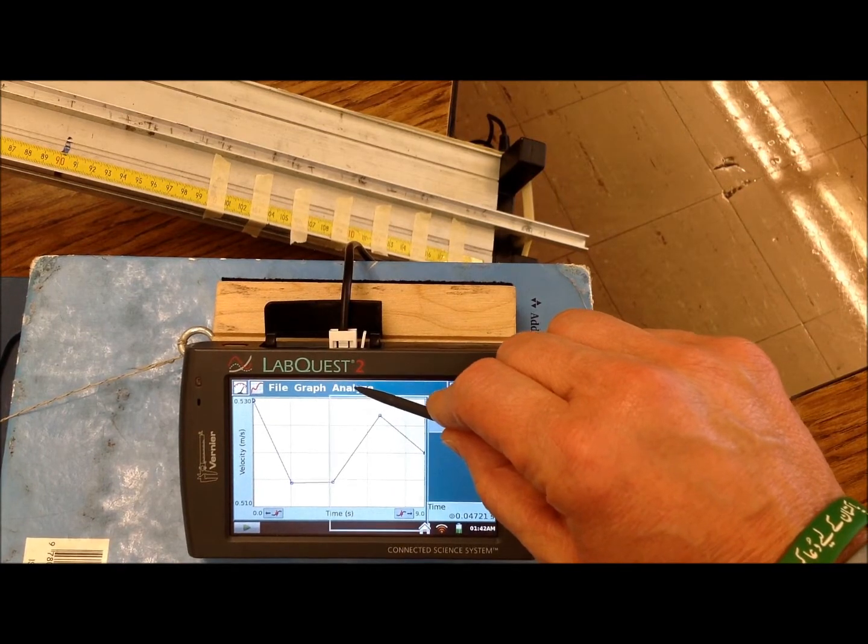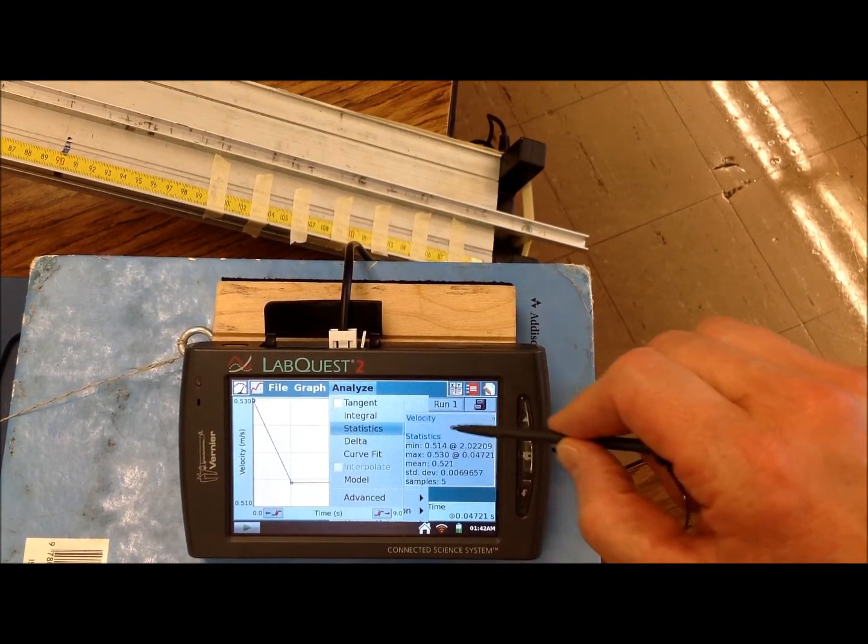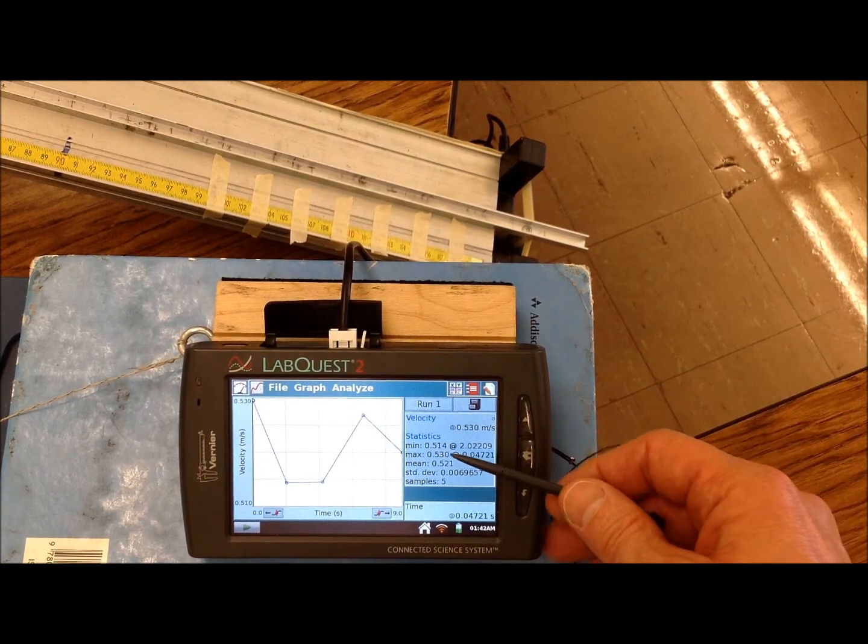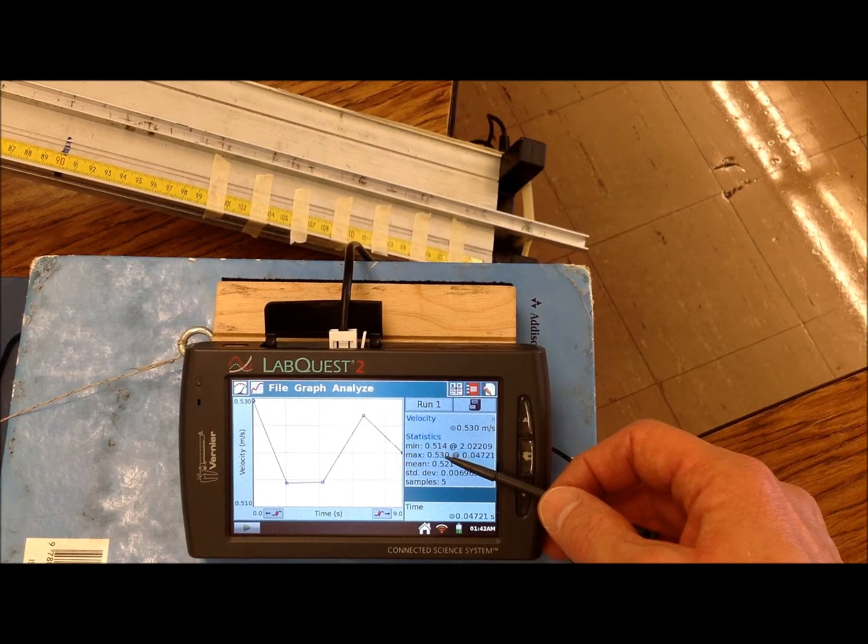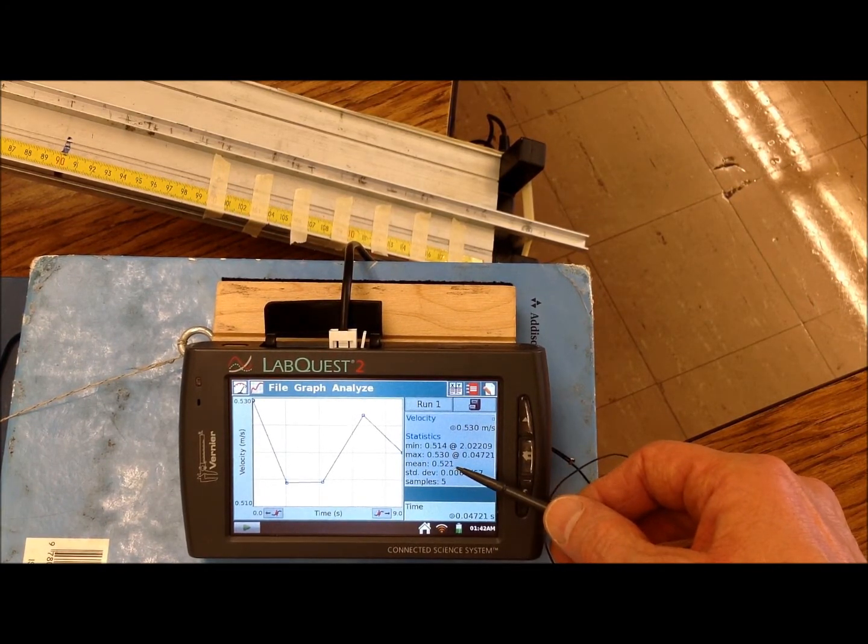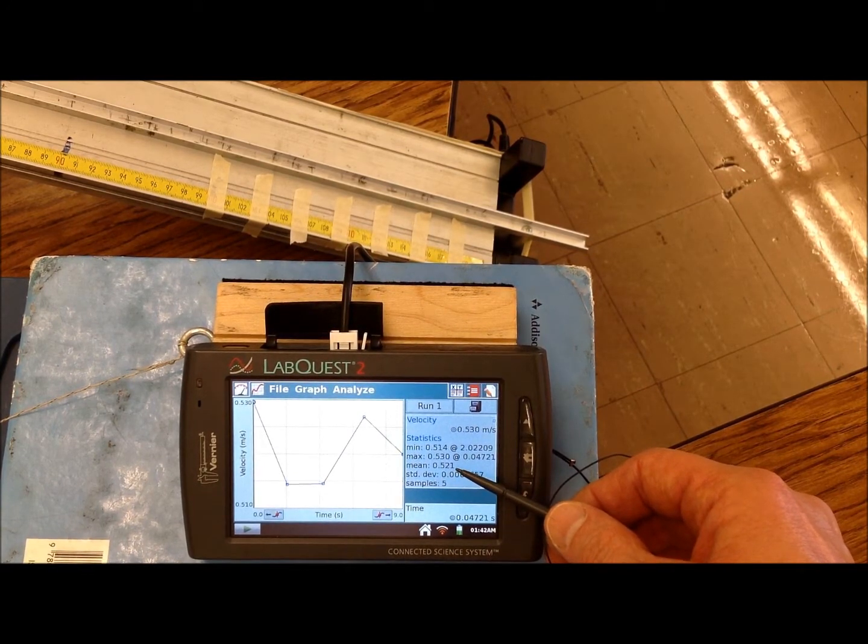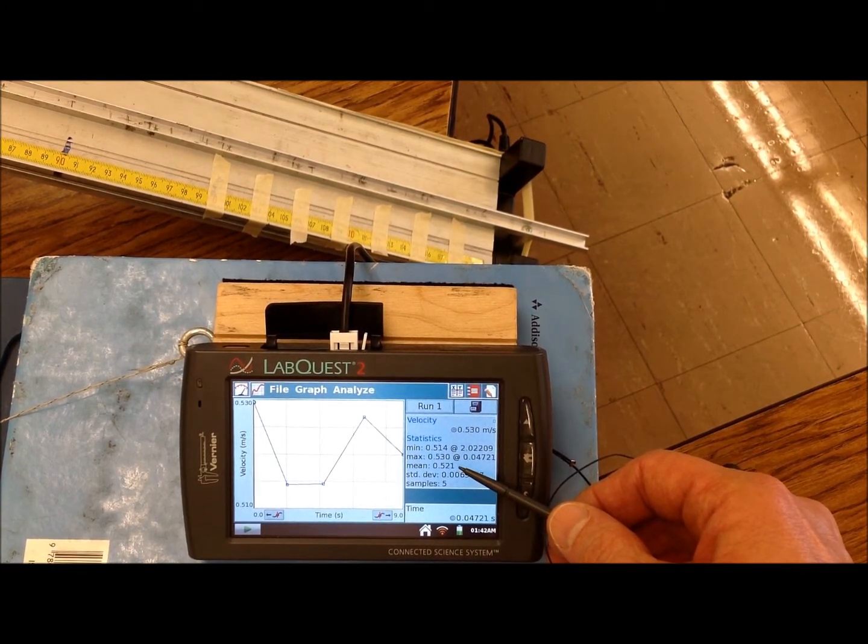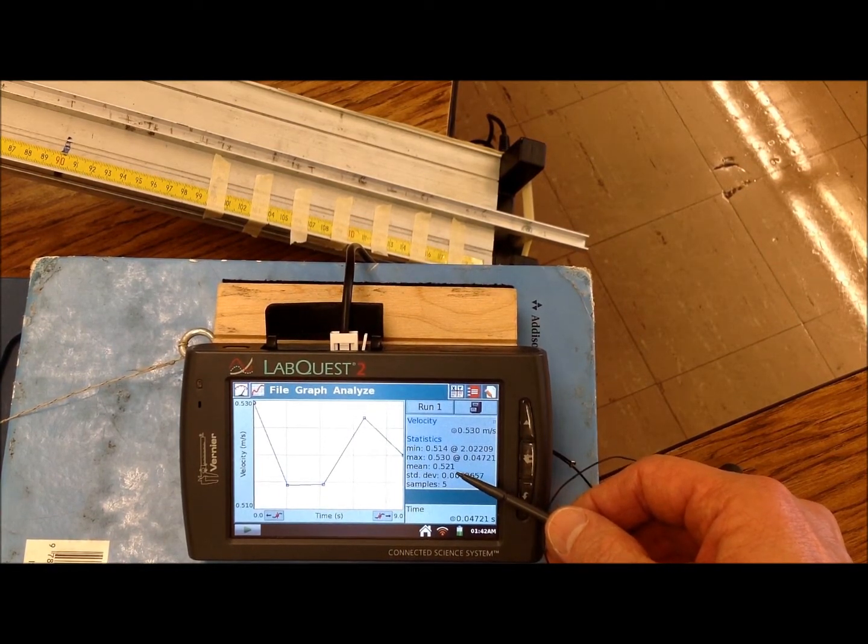Statistics, and we want to do velocity, we find our maximum was .51, or a min was .51, or a max was .53, so that's pretty close. Our mean, and that's what we're going to use for your data, that is your velocity at the 3-centimeter mark, which, remember, we're going to enter as meters. So that .03 meters, our velocity was .521.